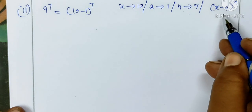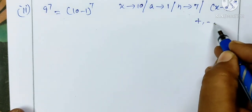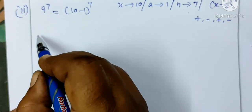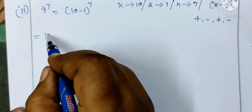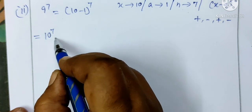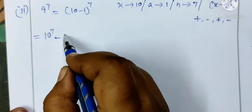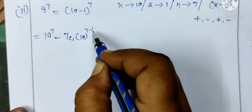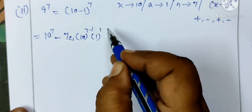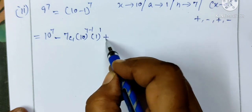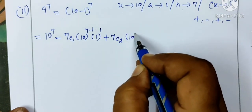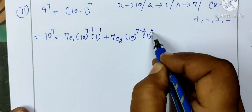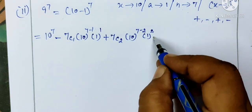So x minus a whole power n is 1 plus, 1 minus, then plus, then minus - this alternates plus minus. So here we expand: first 10 power 7, then nC1, so nC1 x power n minus 1 a power 1, then plus nC2 x power n minus 2 then a power 2, then nC3.